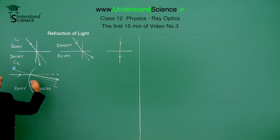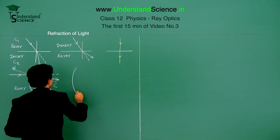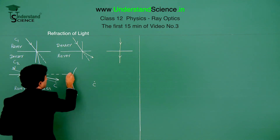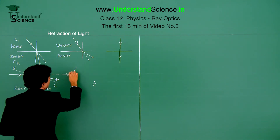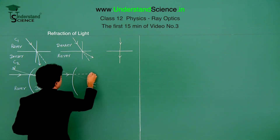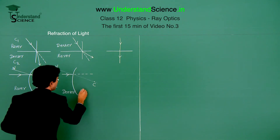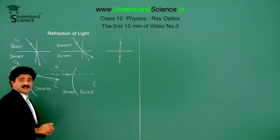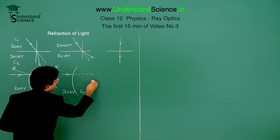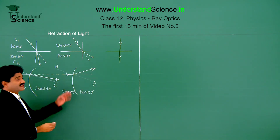This is similar to the flat surface case. Once again, for a spherical surface of separation, if this is the centre of curvature and the light is incident here, the normal passes through the centre of curvature. Here being denser and that being rarer — when it is incident, instead of going straight, since it enters a rarer medium it will bend away from the normal. So the light ray goes like this, which is similar to the flat surface case.